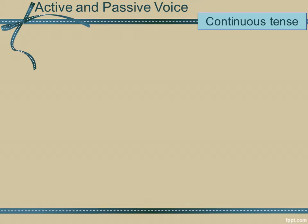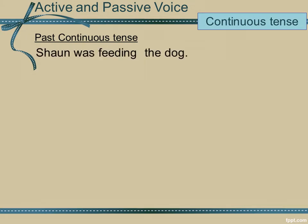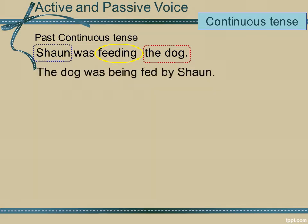Let's look at the continuous tense — past continuous tense. Sean was feeding the dog. Sean is my subject, feeding the verb, the dog the object. I just switch them around to get the passive voice, with Sean at the end of my sentence and the dog at the start. In the continuous tense in passive voice, you will see that I added the word 'being', so that the sentence reads: the dog was being fed by Sean.